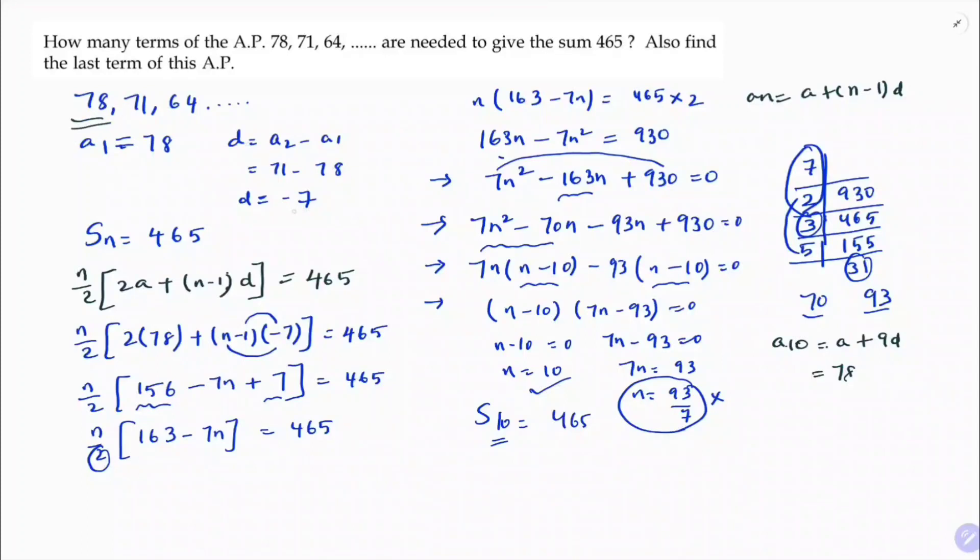So 78 plus 9 into minus 7. 78 minus 9 times 7 is 63. So 8 minus 3, 5, 7 minus 6, 1. So the last term in the series is 15 because sum of 10 terms, in the 10th term, the last term is 15.